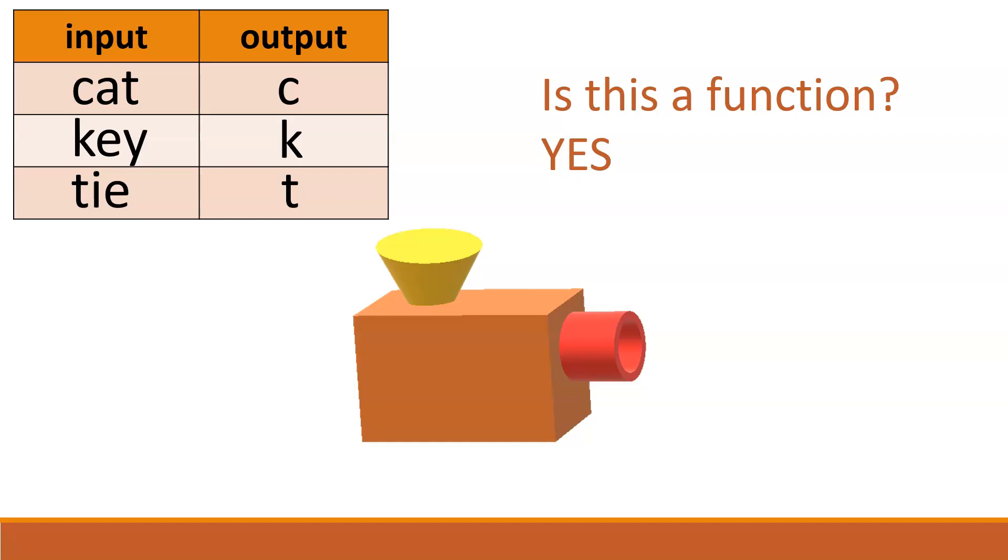Each input is matched up with only one output. The input of cat only has an output of c, the input key only has an output of k, and the input tie only has an output of t.